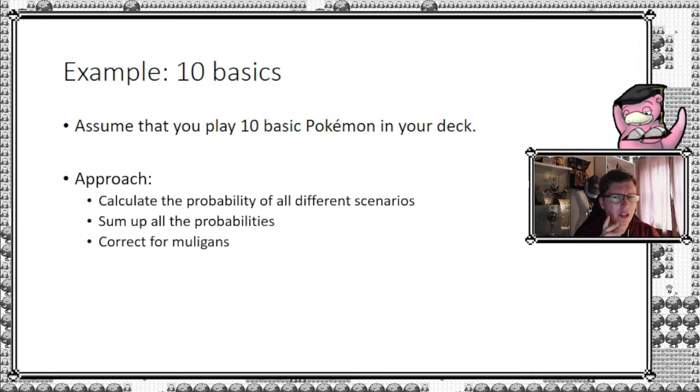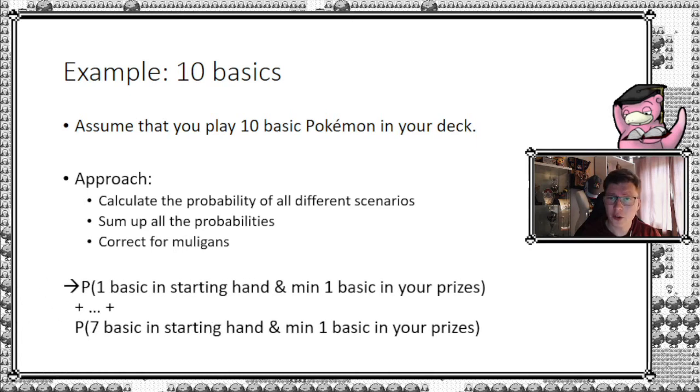You may want to think, what do I mean by each of these scenarios? Well, in the first scenario you have one basic Pokemon in your starting hand and then at least one in your prizes. The second scenario would be two basics in your starting hand and at least one in your prizes, up until and including seven basic Pokemon in your starting hand and at least one in your prizes.